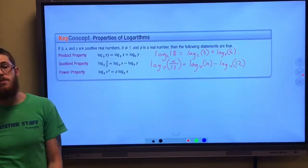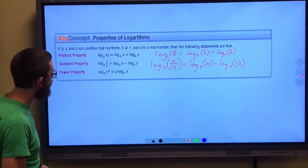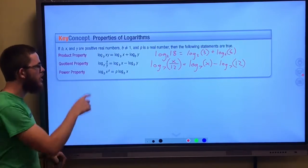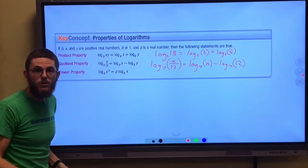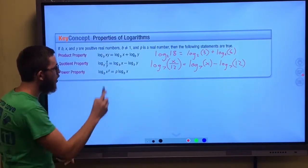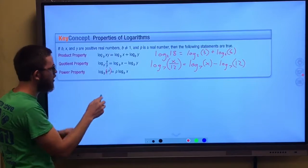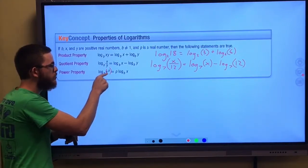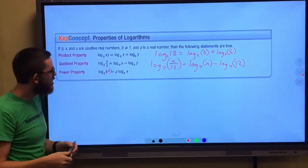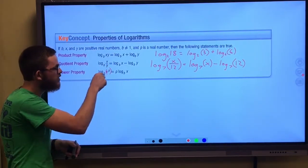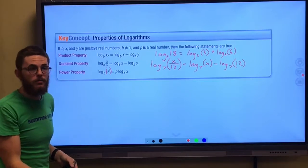Finally, the power property, which may come into play more than any of the rest of them. Super helpful. Log of some base of something being raised to a power. Now notice all of that is part of the log. It's not log base b of x and then all of that being raised to the power of p. The power of p is applied to what we're taking the log of.